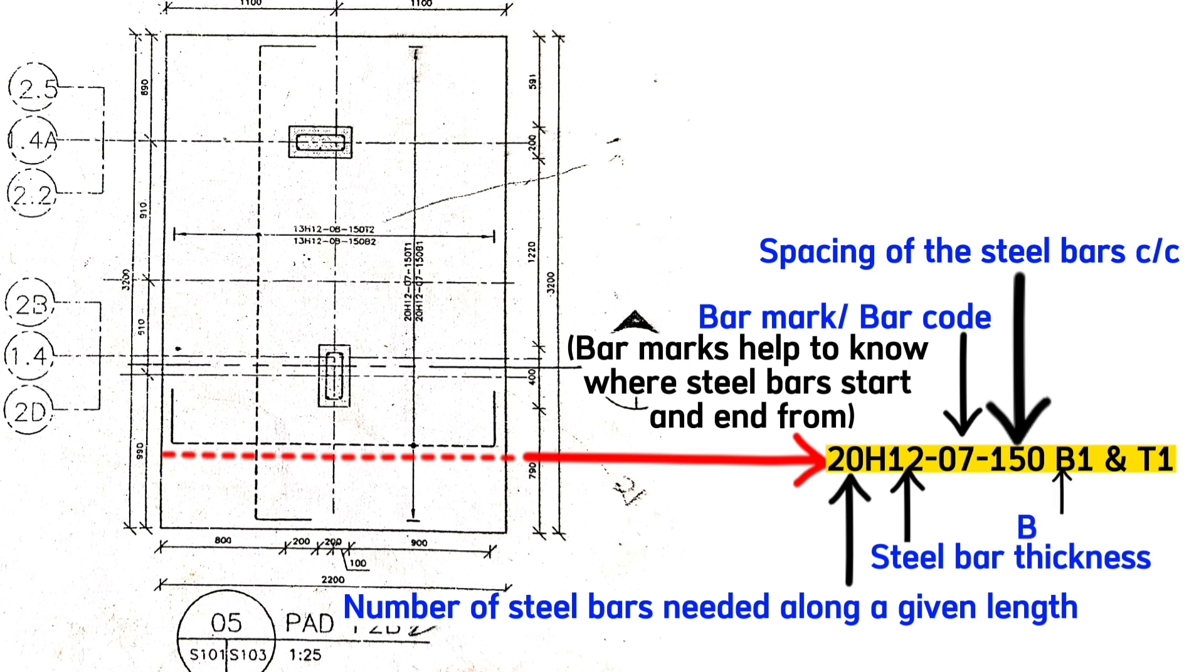B1 means bottom one, which we must always lay along the shorter side, and B2 means bottom two, which we must always lay along the longer side. T1 means top one steel bars that we must always lay along the shorter side, and T2 means top two bars that we must always lay along the longer side.